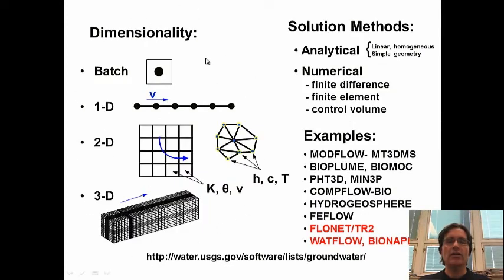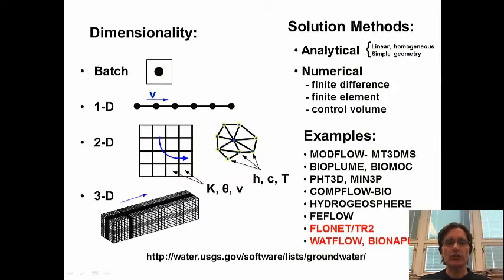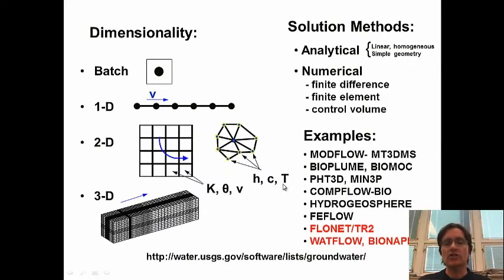Dimensionality is another big issue in modeling. Basically we have four different options: a batch system with no dimensions — most likely at equilibrium with no flow — and we can simulate either a 1D, 2D, or 3D system depending on conditions. When we look at numerical models and their grids, in general when we resolve systems in 1D, 2D, or 3D, we need to define parameters for each element — for instance hydraulic conductivity, porosity — and the unknowns such as hydraulic heads, concentrations, or temperatures will be defined at the nodes. This is a common concept for all numerical models.